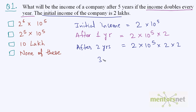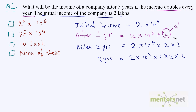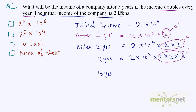After 3 years it will be 2 times 10 raise to power 5 times 2 times 2 times 2, because it doubles after every 1 year. If you observe carefully this is forming a pattern: this is 2 raise to 1, this is 2 raise to 2, this is 2 raise to 3 and so on. So after 1 year it is the initial amount times 2 raise to 1, after 2 years it is initial amount times 2 raise to 2. So after 5 years the amount will be 2 into 10 raise to power 5 times 2 raise to 5.